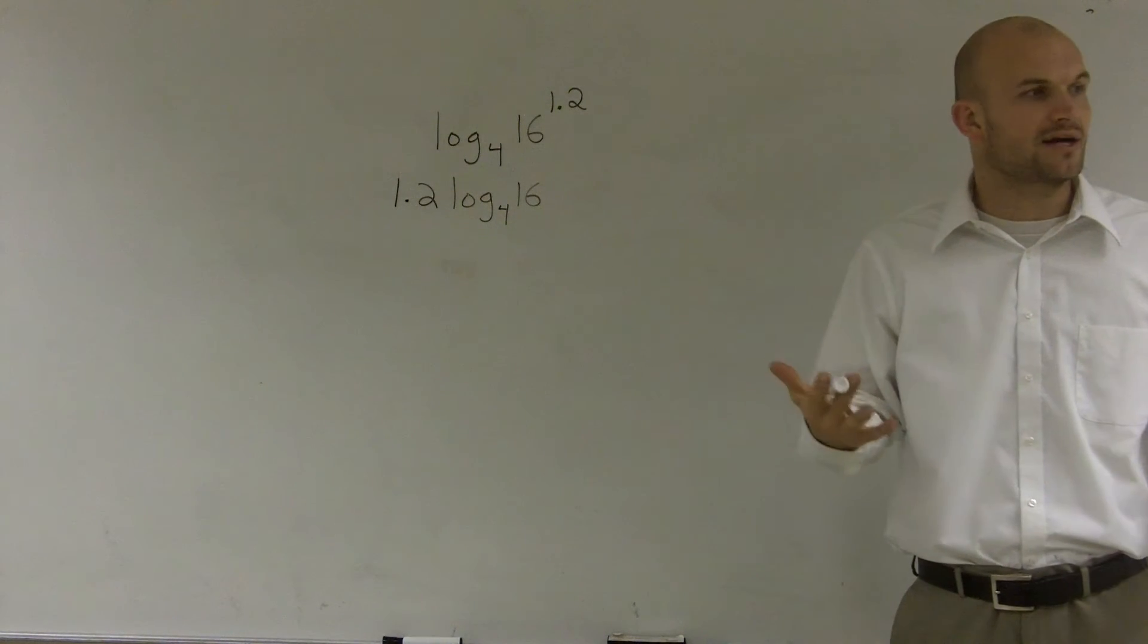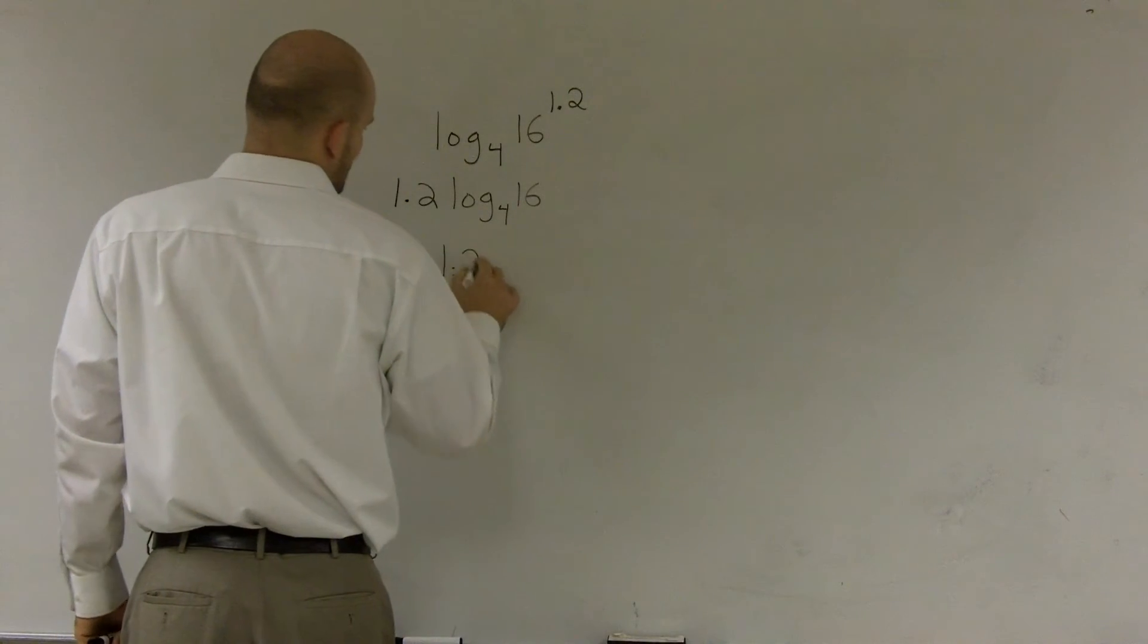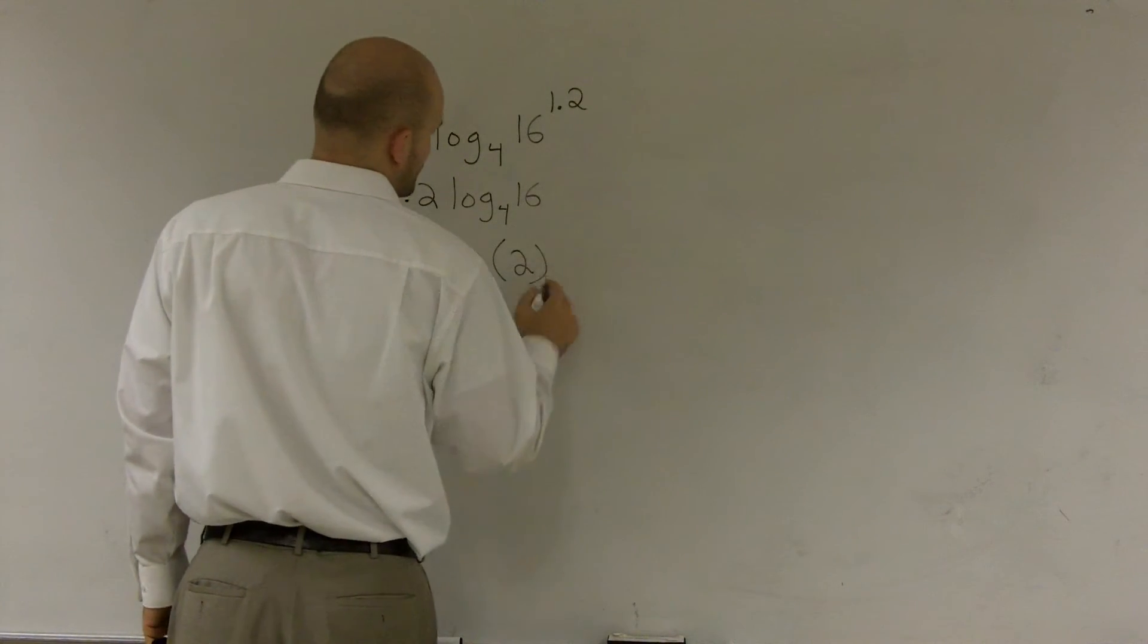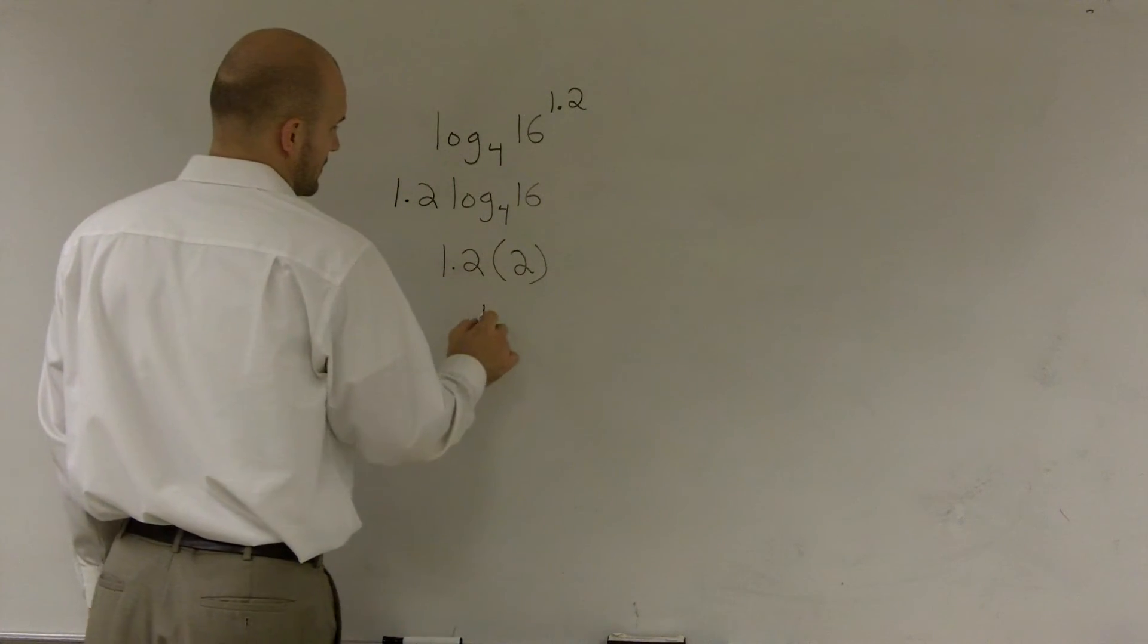Well, we can evaluate that number without a calculator. We know that answer is going to be 2. So therefore, I have 1.2 times 2. Well, that's going to equal 4.